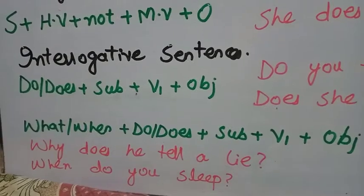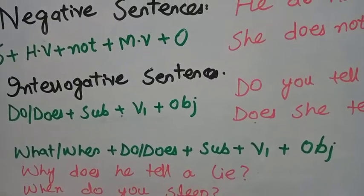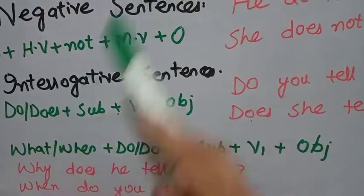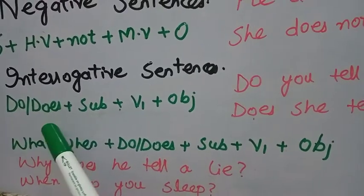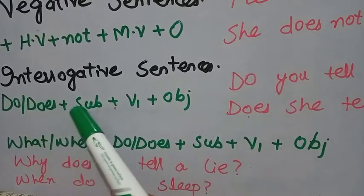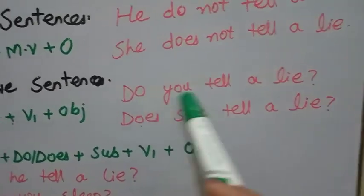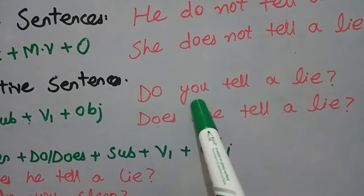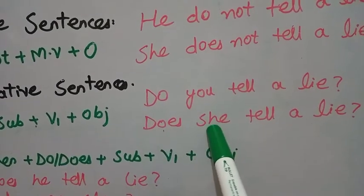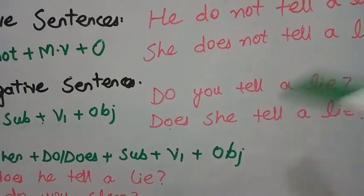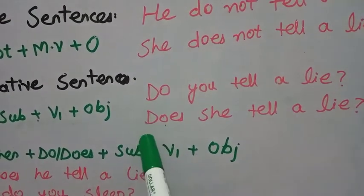For interrogative sentences — sentences that ask questions — in the present indefinite tense, the structure is: Do/Does + Subject + V1 + Object. For example: 'Do you tell a lie?' — Do + subject + main verb + object. 'Does she tell a lie?' — Does + subject + verb + object. Similarly: 'Do you play hockey?', 'Does she play hockey?', 'Do you eat banana?', 'Does she eat banana?' The structure remains the same for all such questions.